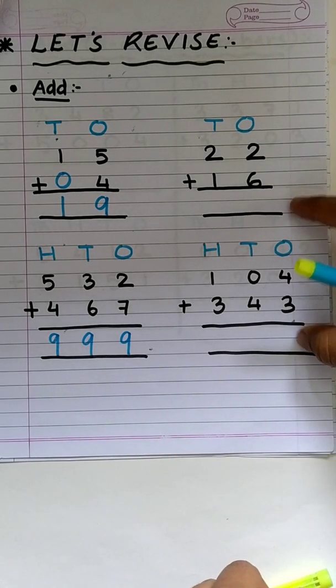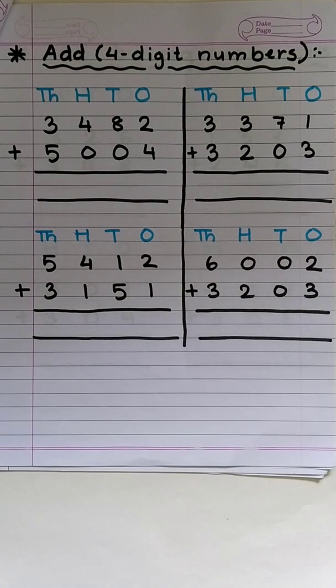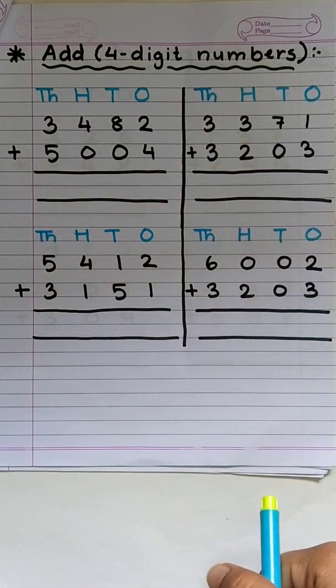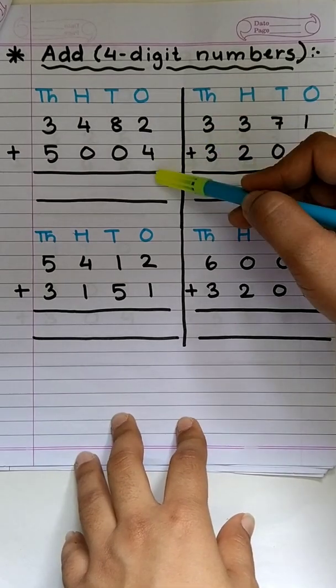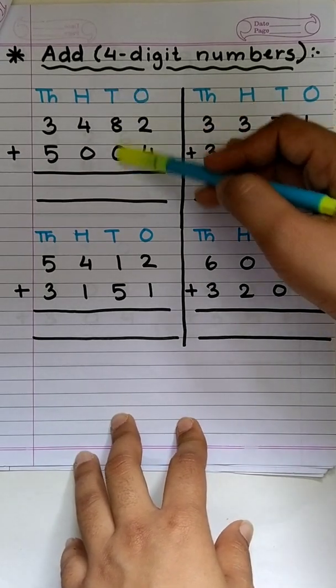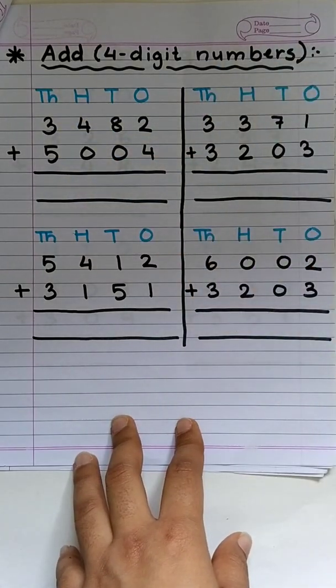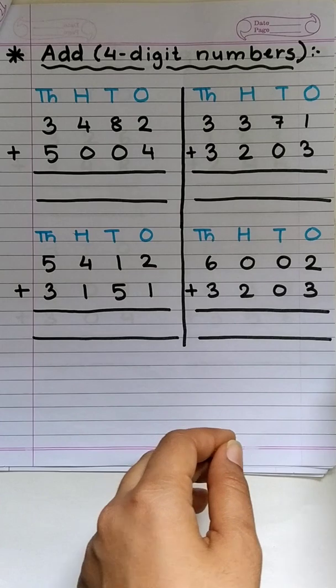Can you solve these two on your own? Show it to me. Now, you have revised adding 2 and 3 digit numbers, right? Nothing is difficult about 4 digit numbers. The method remains the same. We have to add 1's place first, then 10's place, then 100's, and then 1000's. In the same way. Let's start.